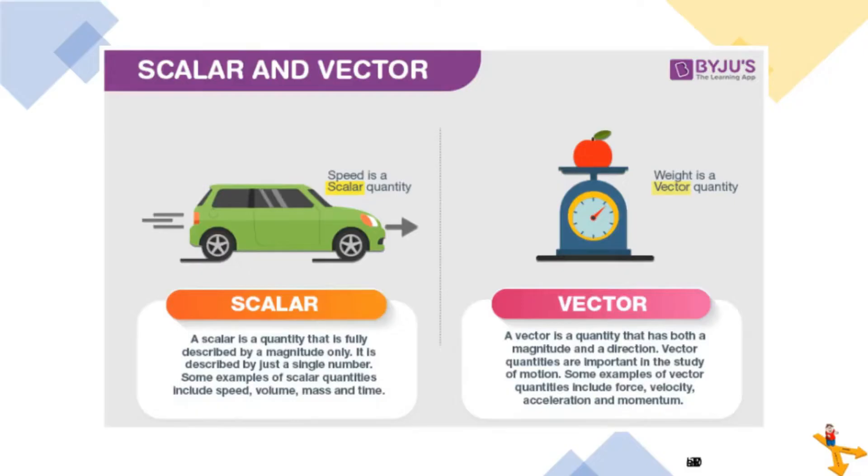On the other hand, a vector is a quantity that has both a magnitude and a direction. Vector quantities are important in the study of motion. Some examples of vector quantities include force, velocity, acceleration and momentum.